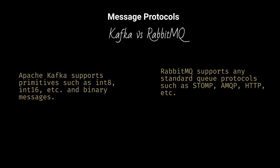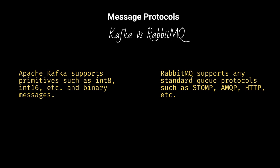Apache Kafka supports primitives such as int8, int16, etc., and binary messages. RabbitMQ supports any standard queue protocols such as STOMP, AMQP, HTTP, etc.